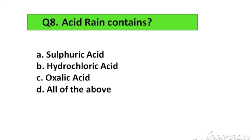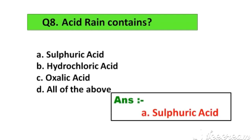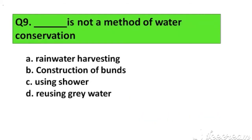Question number 8. Acid rain contains: Option A. Sulphuric acid, B. Hydrochloric acid, C. Oxalic acid, D. None of the above. The right answer is Option A. Sulphuric acid.